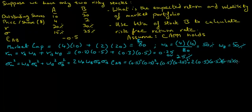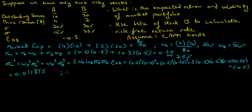Plugging in the values — using weights of A and B times the volatilities of A and B times the correlation between A and B — this equals 0.011875. Taking the square root, we get the volatility of the market portfolio equal to 0.109, or 10.9%. So we have calculated the expected return on the market portfolio, which equals 25%, and the volatility of the market portfolio, which equals 10.9%.